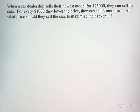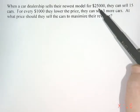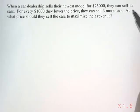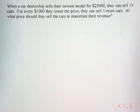This is part two of our lesson on quadratic word problems. Our second question is a different type — a finance problem. It says: when a car dealership sells their newest model for $25,000, they can sell 15 cars. For every $1,000 they lower the price, they can sell three more cars. At what price should they sell the cars to maximize their revenue?